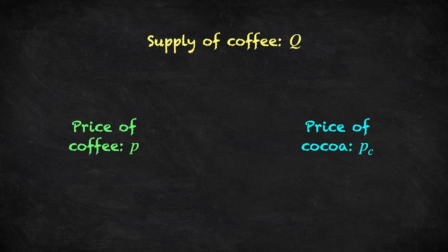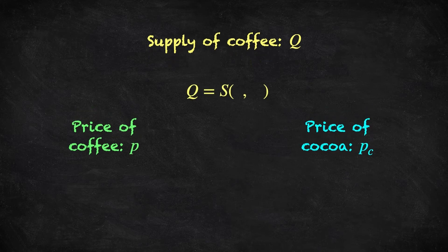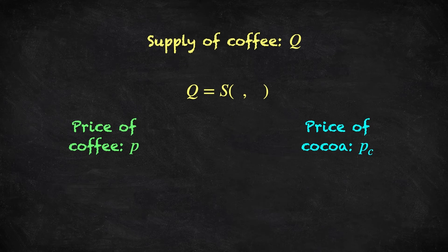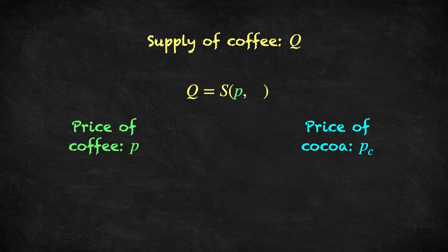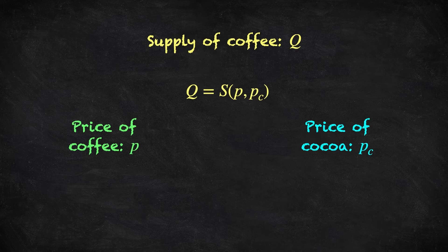To model supply, we use the idea of a supply function, which describes the mathematical relationship between relevant variables and the firm's supply. In this case, we suppose that supply is a function, capital S, of the price of coffee and the price of cocoa. The function S could take any form in general.